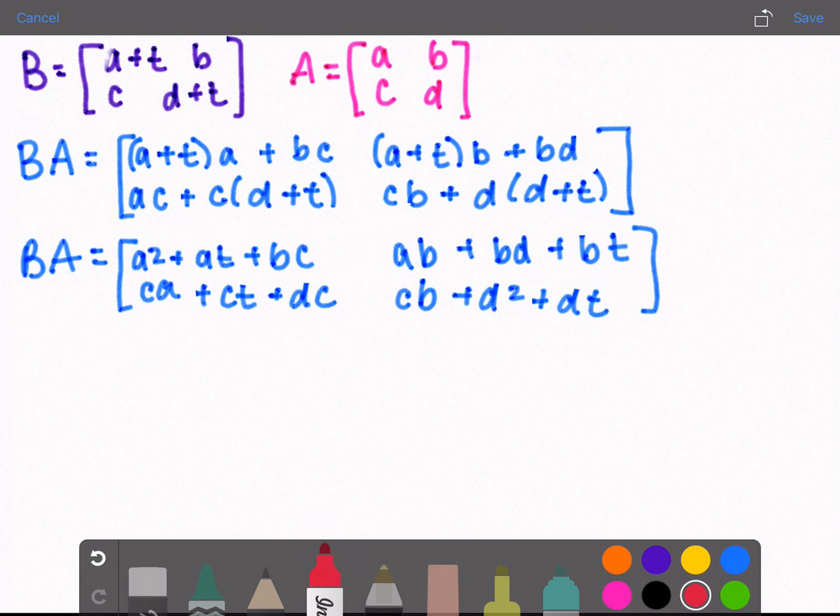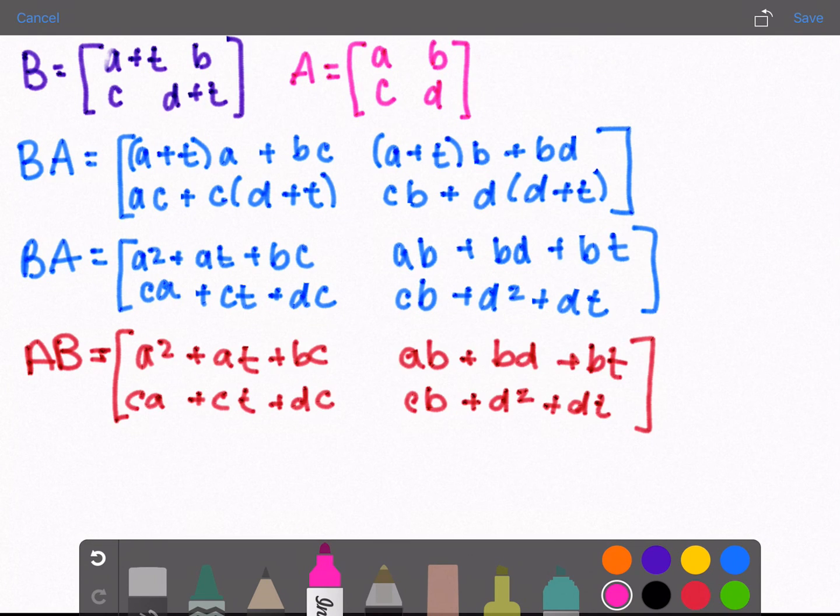Now if you recall what AB looks like from the previous page, they are the exact same. AB equals B times A. Therefore, for every real number t, A commutes with B.